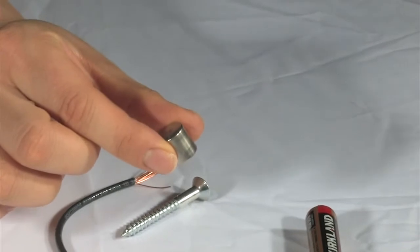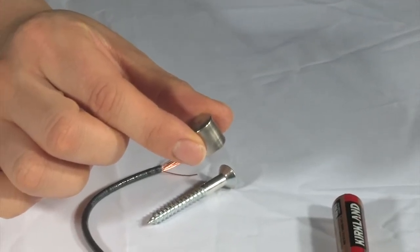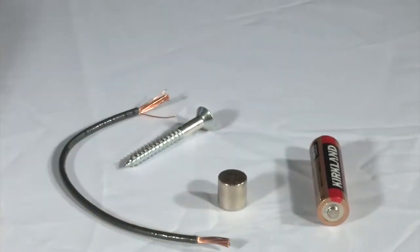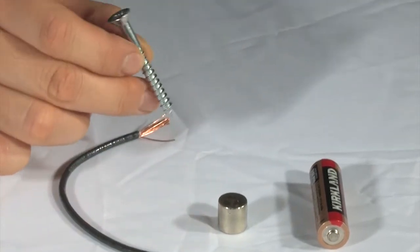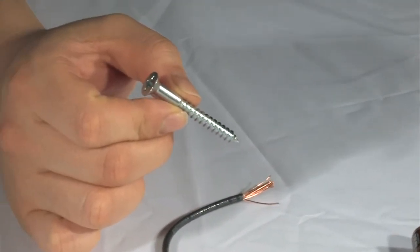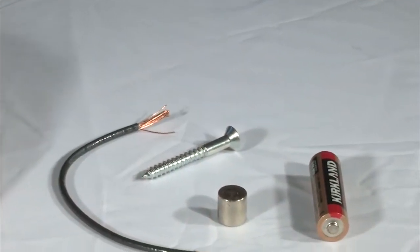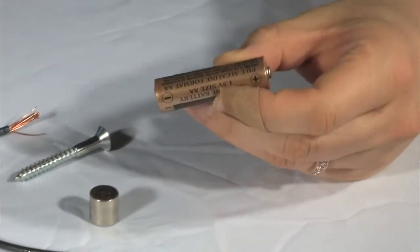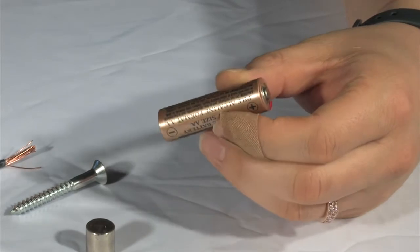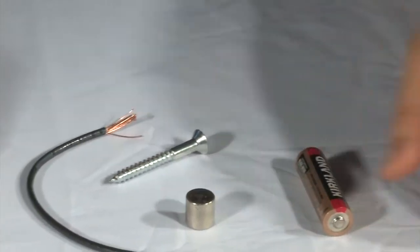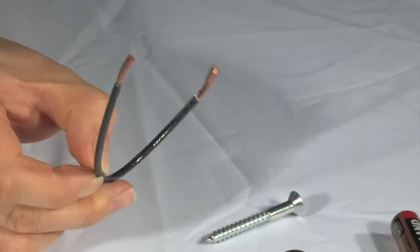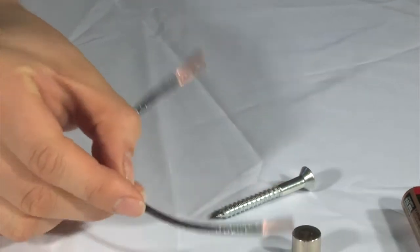For this experiment, you're going to need a very strong rare earth magnet like this one, an iron screw of some kind, and a power source which comes from a one-and-a-half volt AA-sized battery. We're also going to need a small length of copper wire.